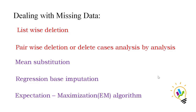The second deletion method is Pairwise Deletion, also called analysis-by-analysis deletion. For example, if your first test uses variables A and B, only the missing values in those two variables are deleted — it does not affect missing data in other variables. If your next test uses variables C and D, the system deletes only those missing values. So deletion happens analysis by analysis, which is the key distinction from listwise deletion.